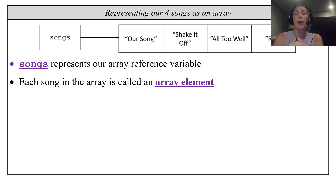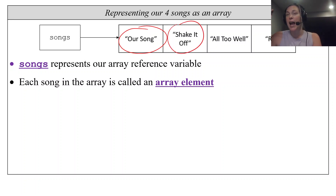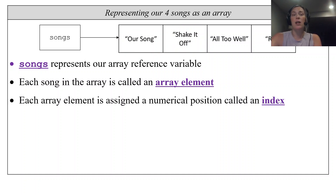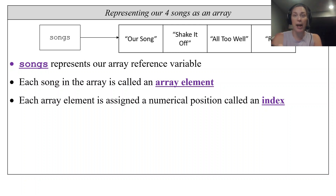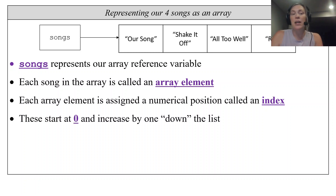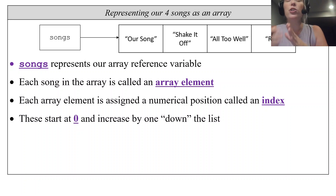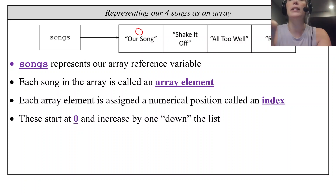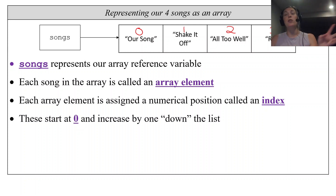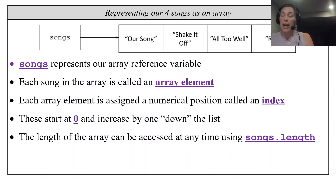Each song in this array is called an array element. Each array element is assigned a numerical position called an index. In an array, indices start at zero and increase by one going down the list — so the first song is index zero, then one, two, three. Those are my four indices.